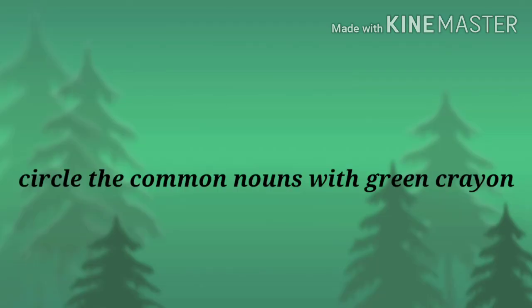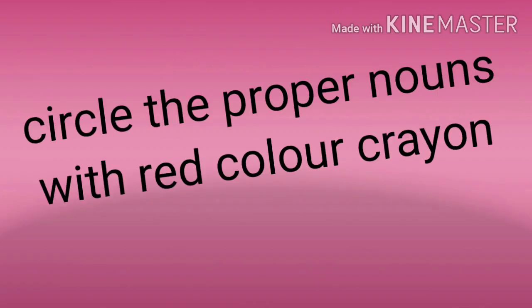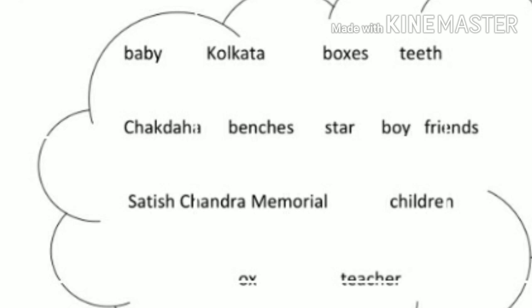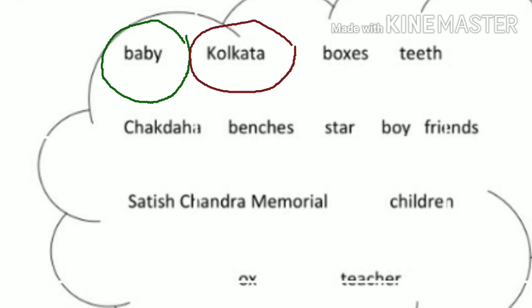Now the next instruction: circle the common nouns with green crayon — crayon means colour — and circle the proper nouns with red crayon. We will first take one green crayon and circle the words which are common nouns. Like the first word, Baby — Baby is a common noun. Then with a red colour crayon, we will circle the proper nouns. Like Kolkata is a proper noun, so let me circle it for you. This way, you will circle all the 13 words.